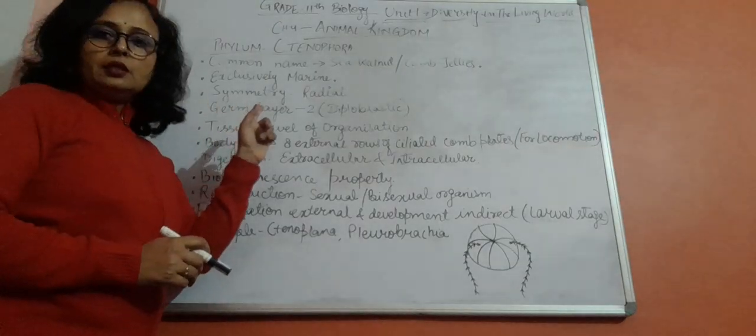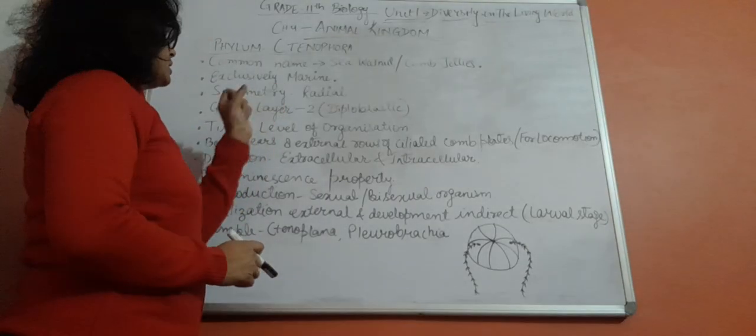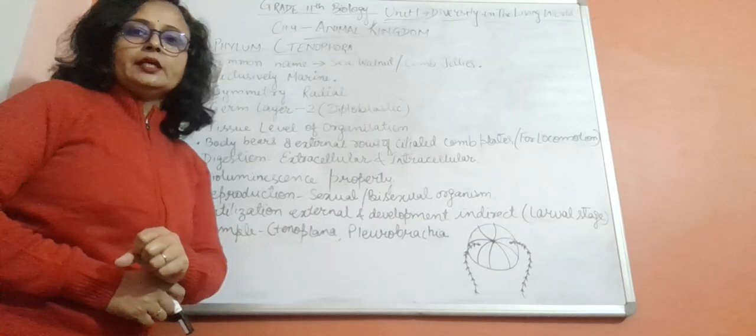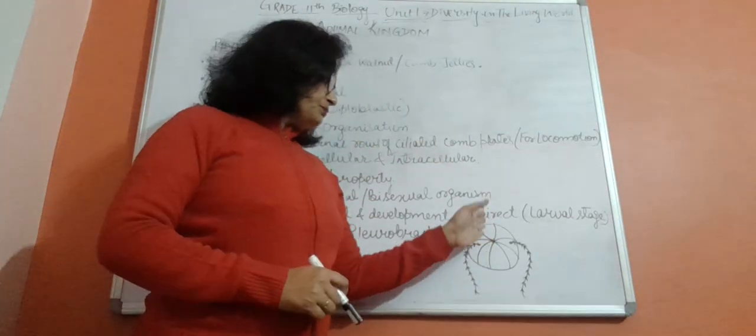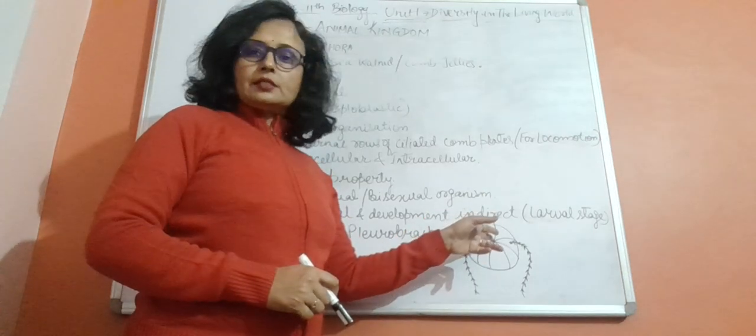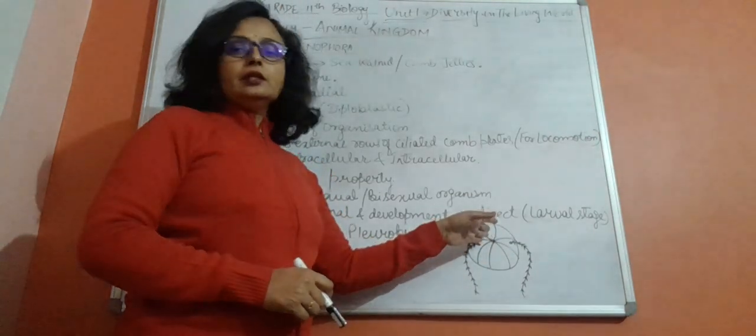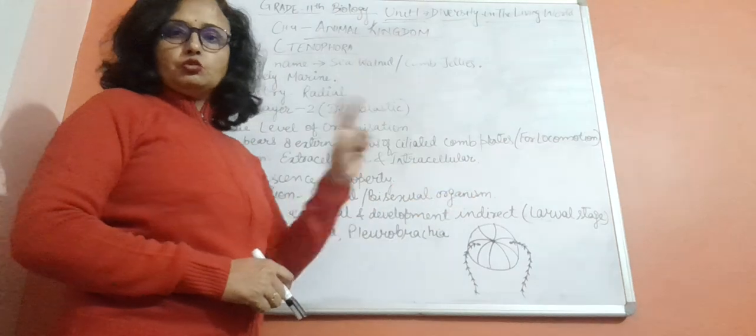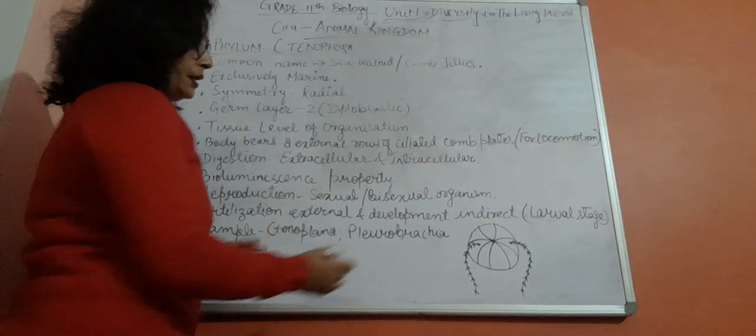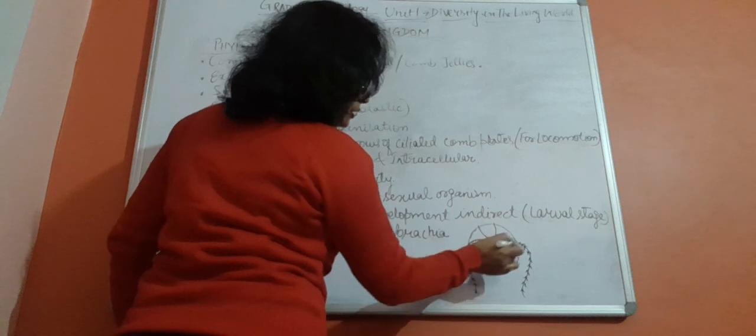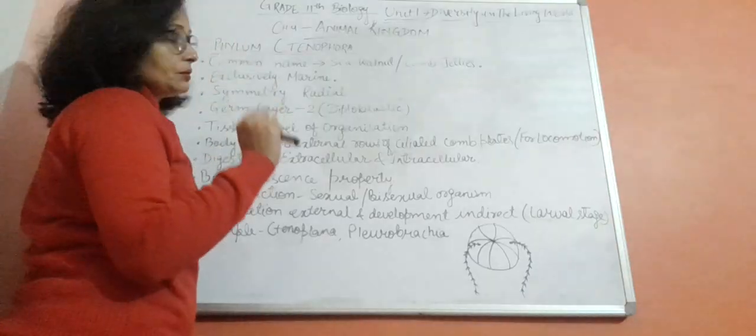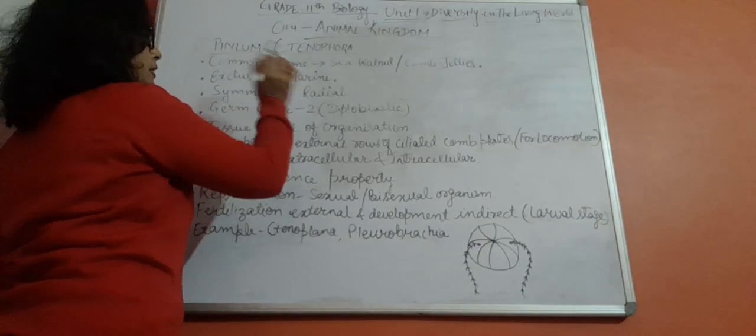Symmetry is radial. As we discussed earlier, if you cut its body by taking the axis from any part of the body, you can divide it into two equal parts. That is radial symmetry.